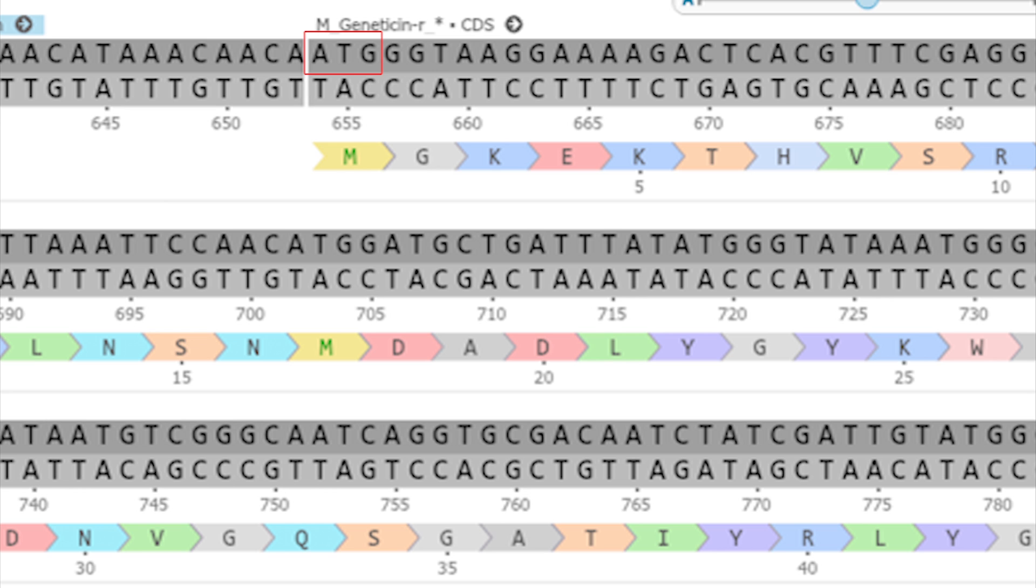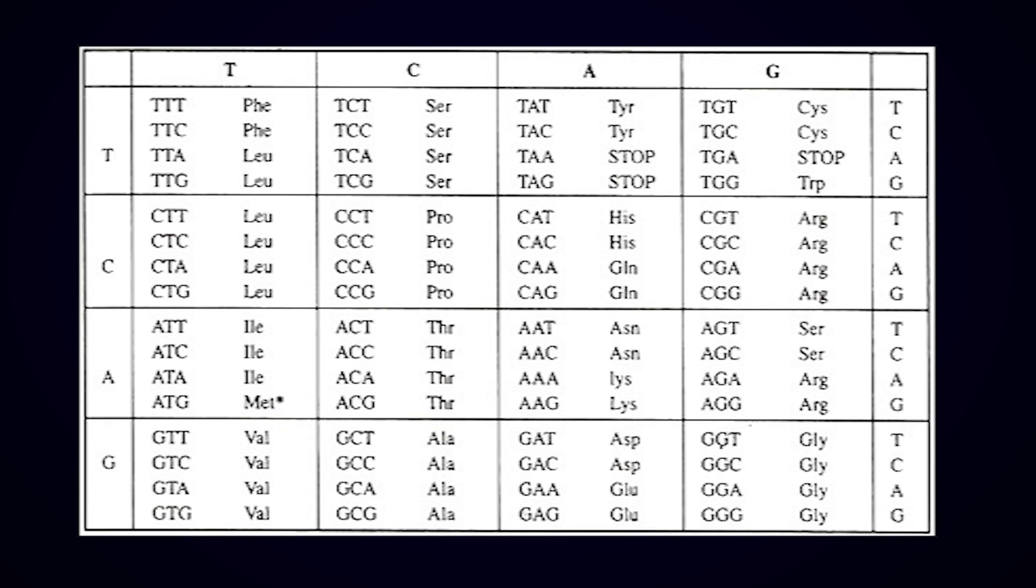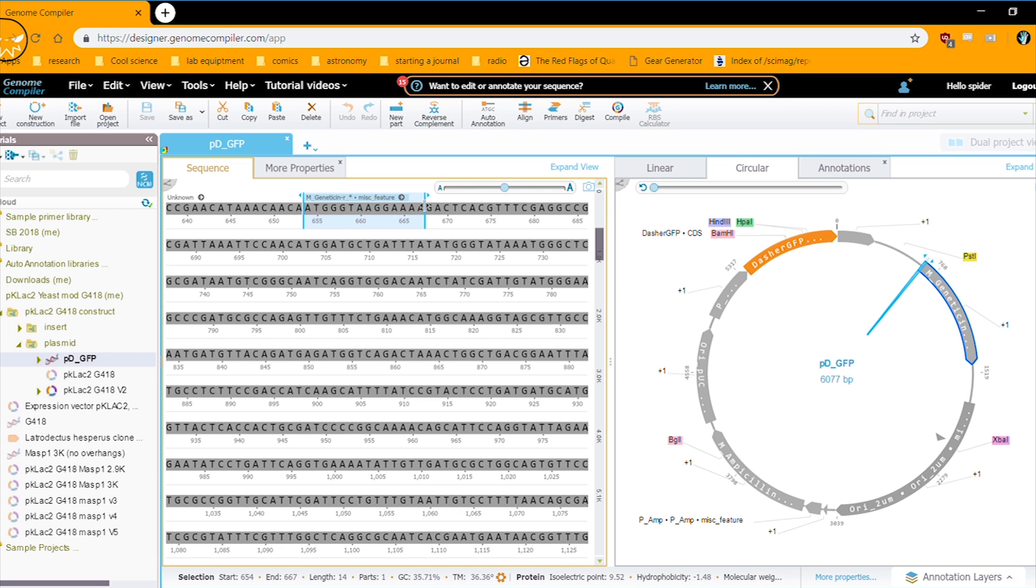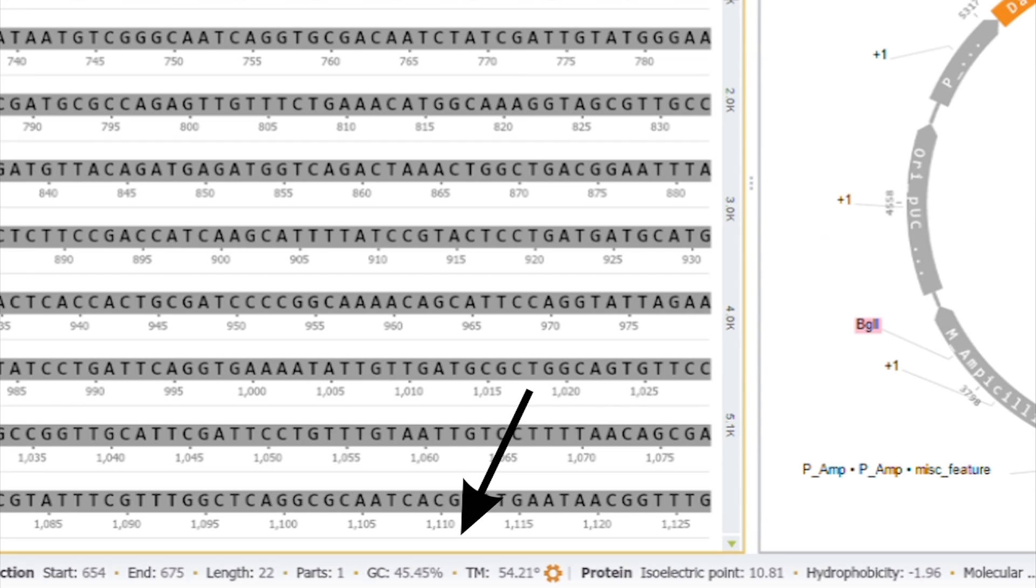The first thing to notice is these three letters, A-T-G. DNA is divided into three-letter segments called codons that code for different amino acids. Here Genome Compiler shows the amino acid sequence underneath. A-T-G codes for an amino acid called methionine, but methionine is also what's called the start codon. After the DNA is copied into RNA and the RNA is going to be translated into protein, A-T-G is always the spot where translation starts. So almost all proteins, at least when they're first made, start with a methionine. The point being is that this marks the start of the G418 resistance protein. So this is where we want to start our primer. Once we know that, we just highlight the sequence starting there and extend anywhere from 15 to 25 letters further.